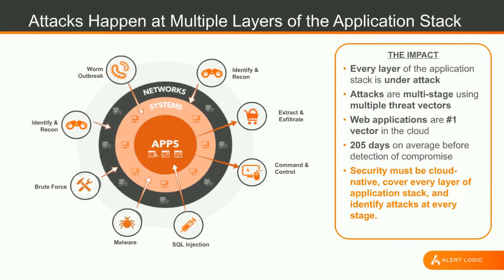Now that we know a little about how the attackers work, in the cloud space the number one attack vector is the application stack. Most people, when they start to move into the cloud, will start by moving web products first — they tend to be easier to migrate and there's a strong platform already designed to support web-based applications. Ultimately, your applications are exposed to the internet because you want to provide a service to somebody. So the number one attack vector we see is attackers targeting the web application.